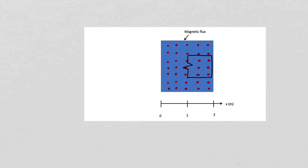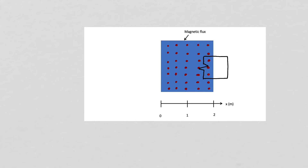Once the circuit is totally inside the magnetic flux region, there's no change in magnetic flux, so there will be no induced current until it starts to leave. As it's leaving, the magnetic flux coming out of the page inside the circuit is decreasing. Lenz's law tells us there will be an induced current to resist this decrease, so a counterclockwise current flows — producing a magnetic flux out of the page inside the circuit as the circuit leaves the magnetic flux region.